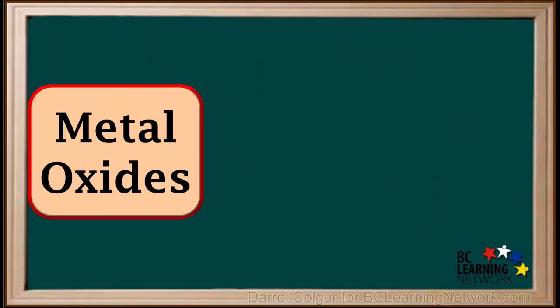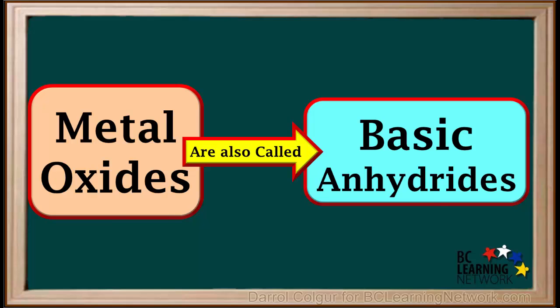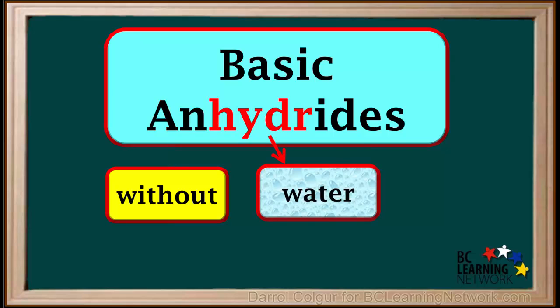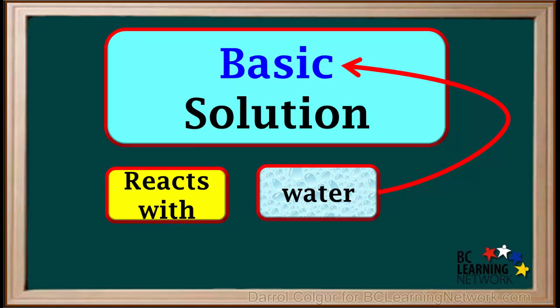You should also know that metal oxides are also called basic anhydrides. The prefix 'an' can mean 'without', and the root 'hydra' refers to water. So a basic anhydride can be thought of as a compound without water, which reacts with water to produce a basic solution.